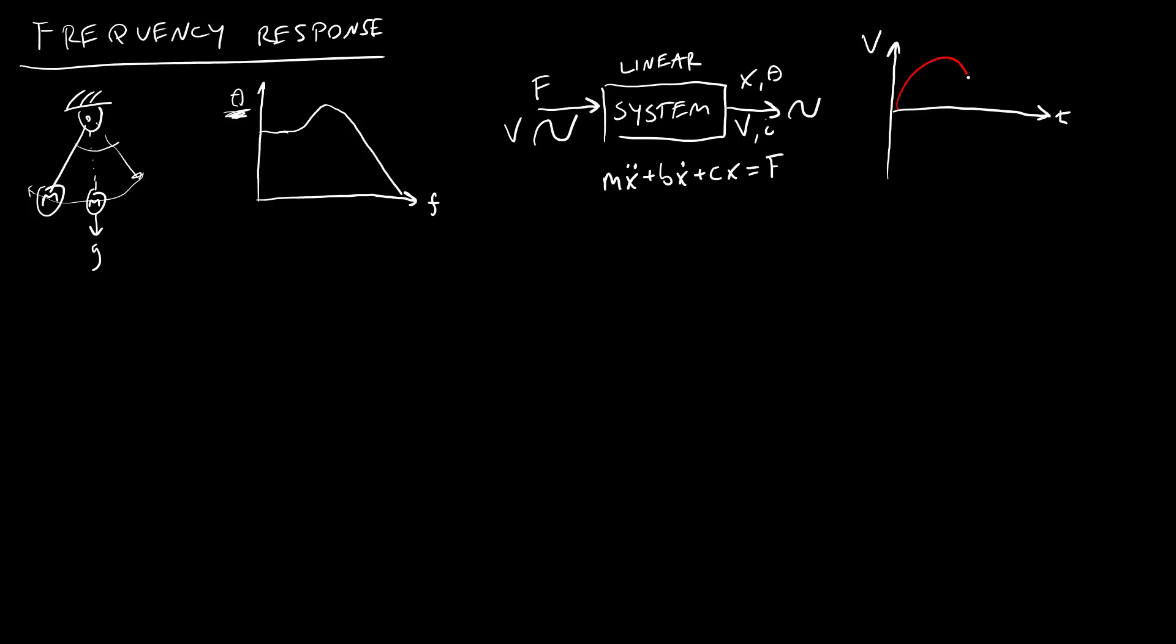I might have an input voltage that looks something like this, and then I can have an output voltage for my system, but it is going to be shifted in both phase and amplitude from my input.